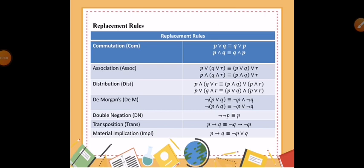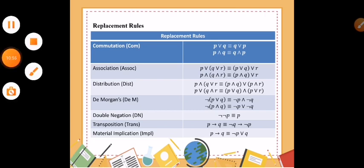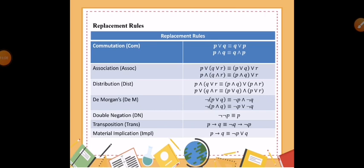Now let's discuss the replacement rules. Here are some replacement rules. The commutation or commutative property, and the association or the associative rule. In commutative rule, you are pertaining to the order of the propositions. P or Q is logically equivalent to Q or P. Even though we change the order of the propositions used for disjunction or conjunction, still they are logically equivalent. The associative property is about the groupings — as long as you have the same order and the same operator, it will be logically equivalent though you change the groupings.